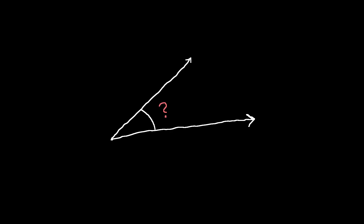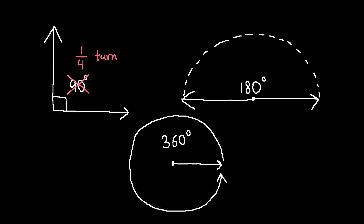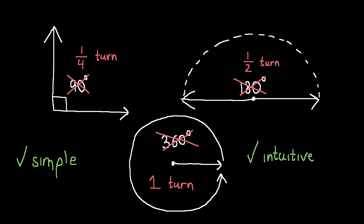The question then becomes: is there a more natural way to measure angles? The answer is yes. It is so natural, in fact, that I've already mentioned it, but you probably didn't even notice. Turns. A right angle is just a quarter turn, a straight angle or two right angles is a half turn, and a full turn is, well, one turn, obviously. Evidently, one degree is just 1/360th of a turn. The system of using turns is simple, intuitive — and it's not what we're going to be using either.